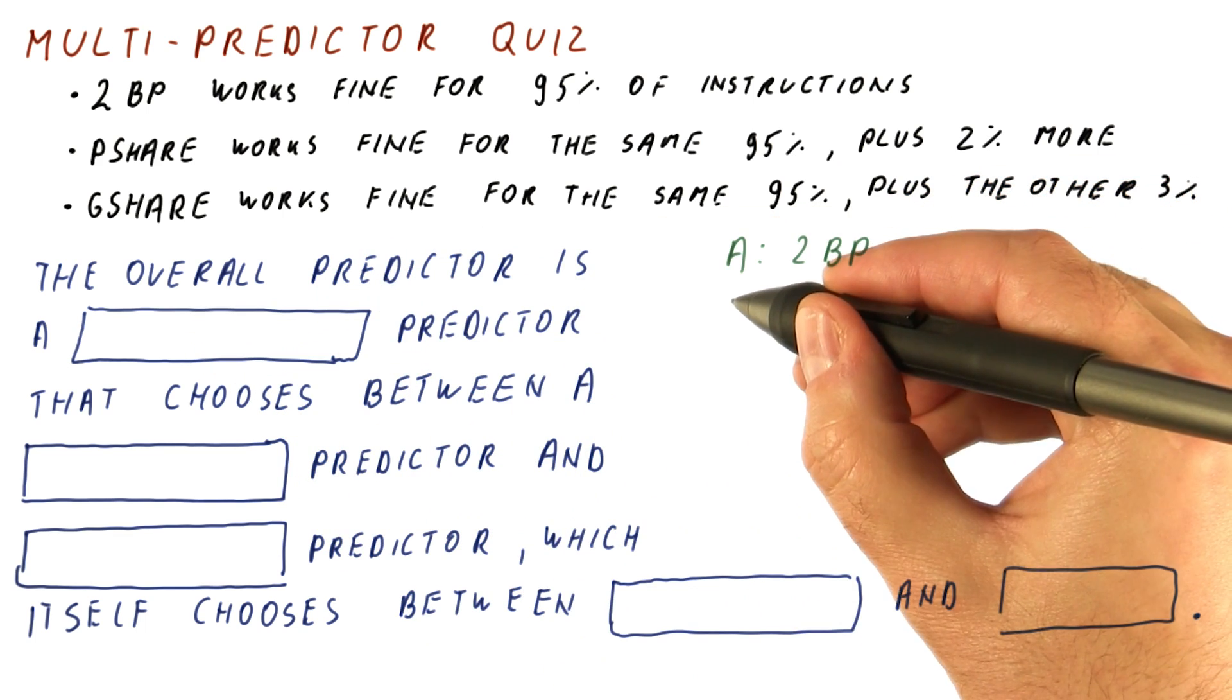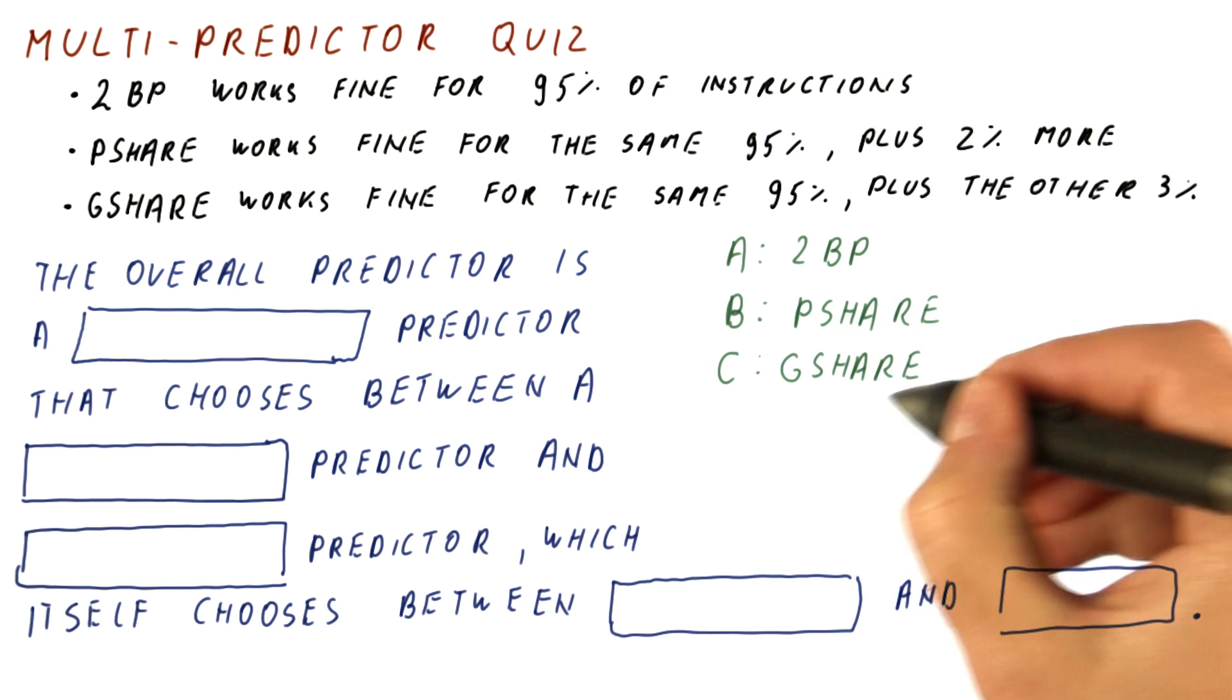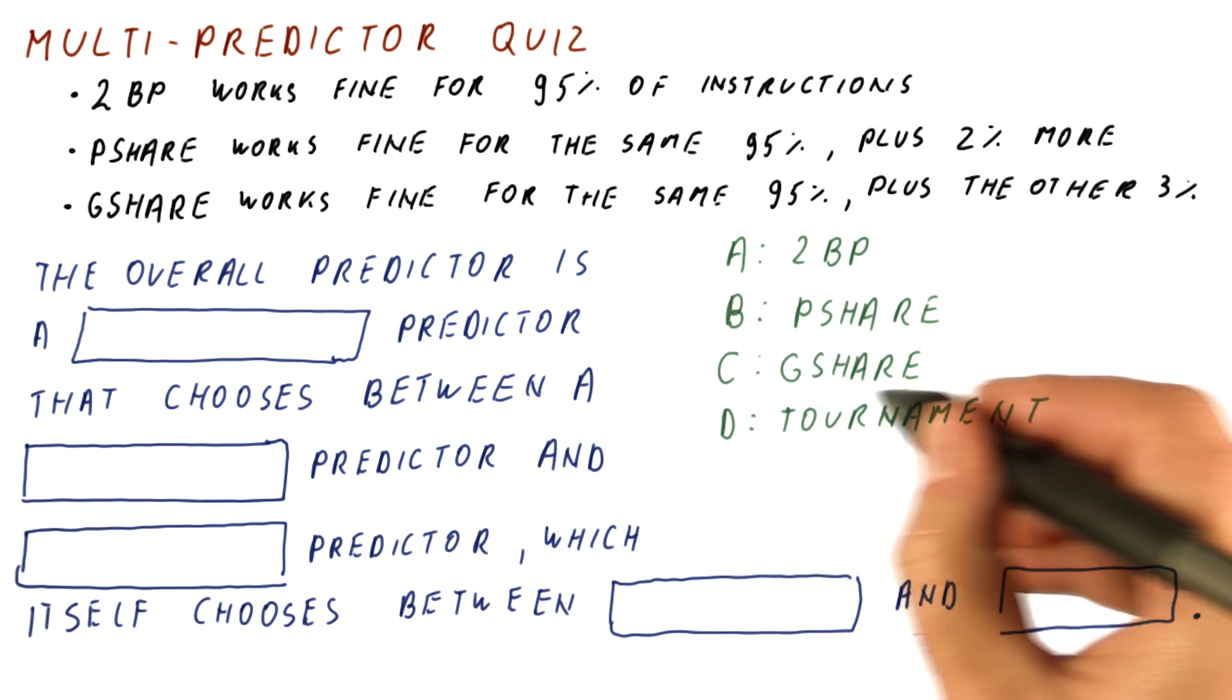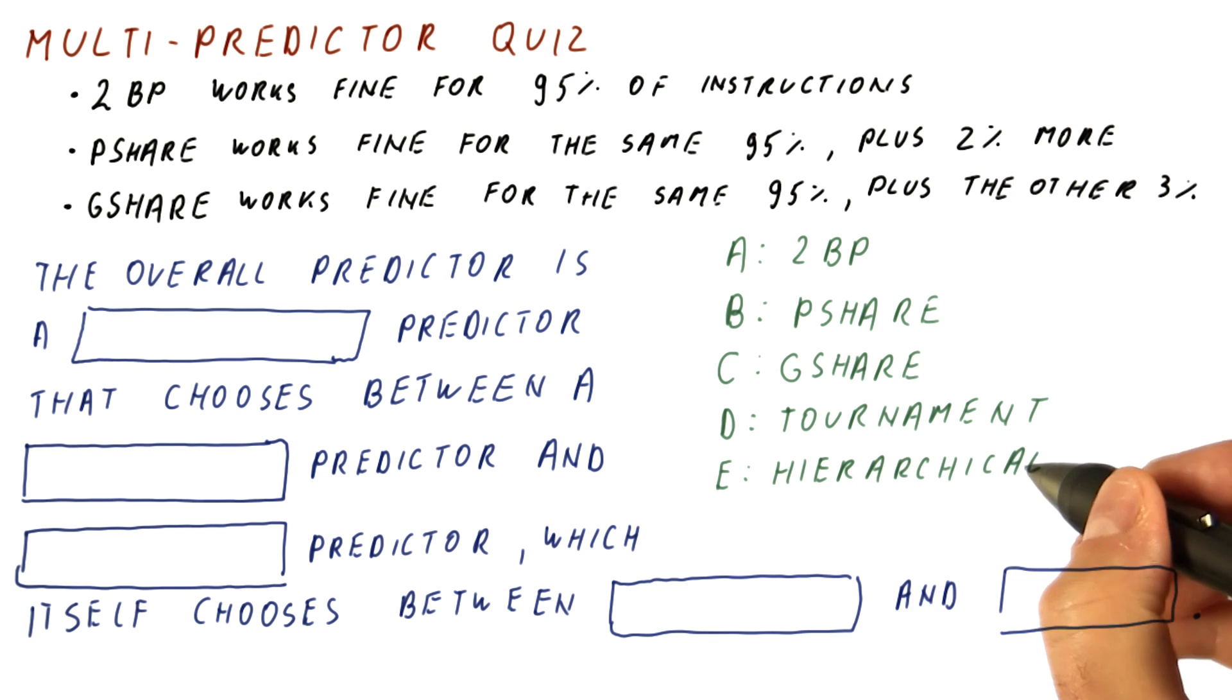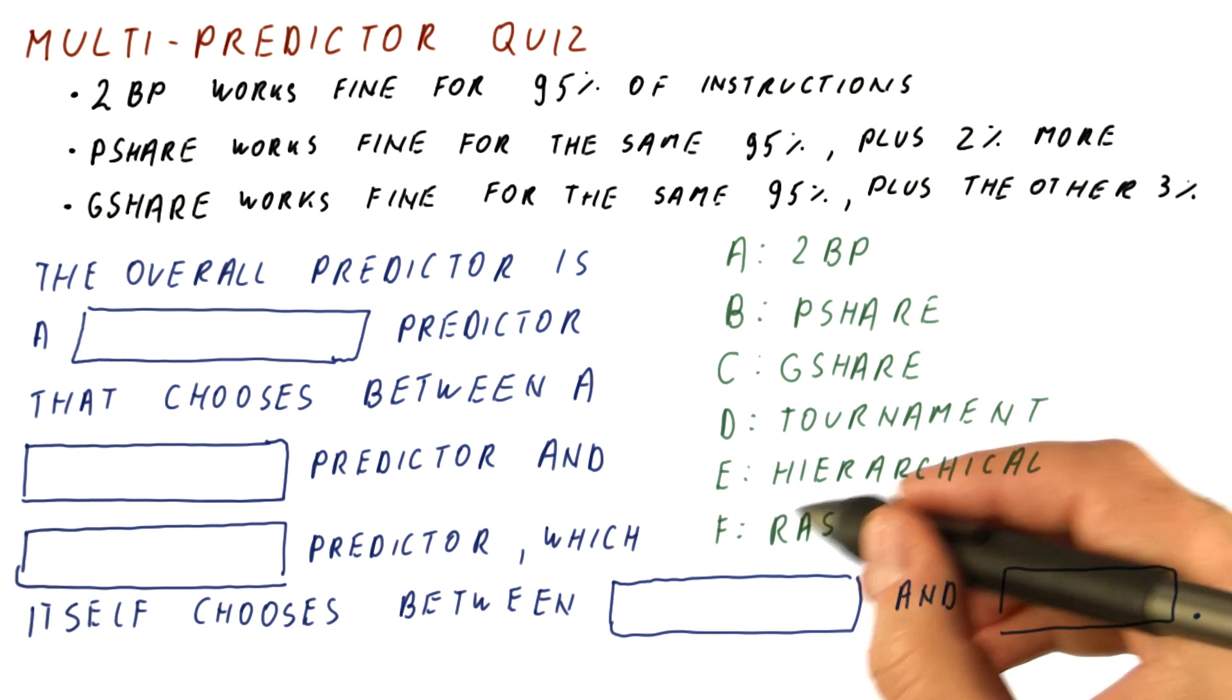A is the 2-bit predictor. B is the P-share predictor. C is the G-share predictor. D is the tournament predictor. E is a hierarchical predictor. And F is the return address stack.